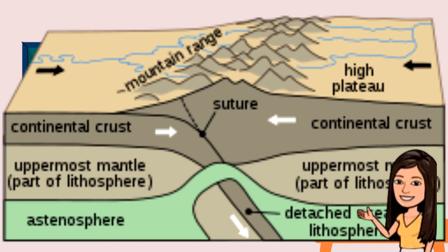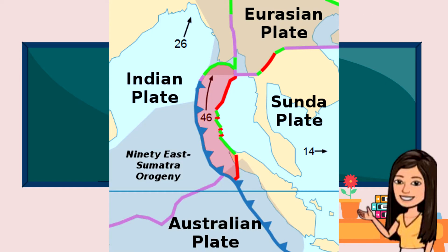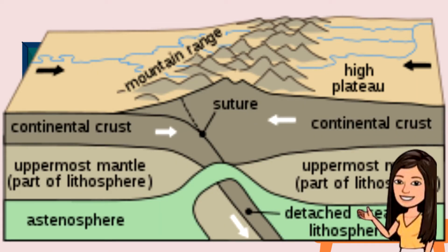Next is the converging of two continental plates. In this convergence, subduction ceases — no trench, no volcano, and no island arc formed in the process. Mountain ranges or large groups of tall mountains are formed. An example of this is the collision of the Indian and Eurasian plates resulting in the formation of the Himalayas. Shallow earthquakes result from the collision of two continental plates.